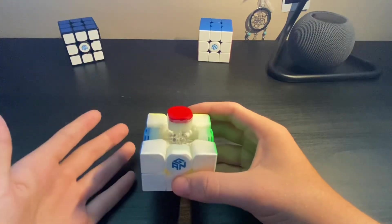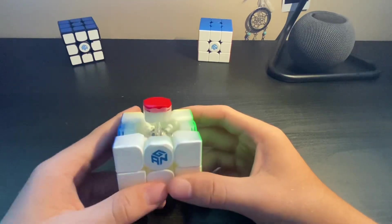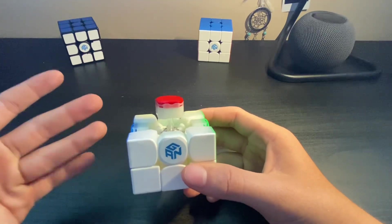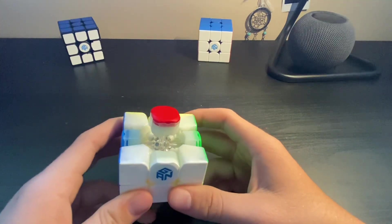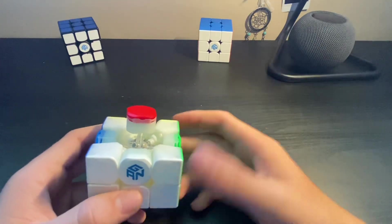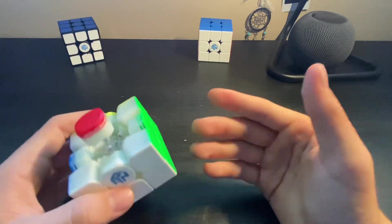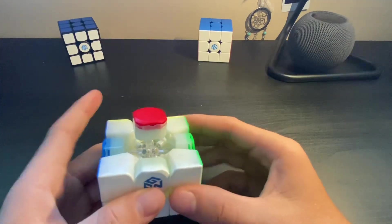Of course, each company uses their own version of a maglev core, like Moyu or the Tornado V3. But I chose GAN because every speedcuber knows what GAN is, and the core is just done to perfection on a GAN cube.